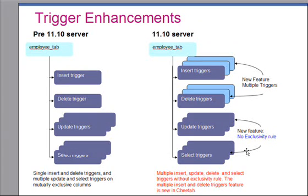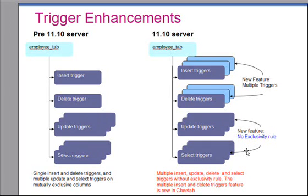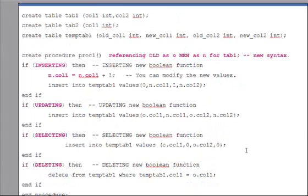There are new enhancements with respect to the number of triggers that you can create for a table. This helps when you have multiple modules working on the same set of tables, so each module can write its own trigger logic or application logic encoded in terms of triggers. We have not only relaxed the restriction on the number of triggers on a table, but also made it easier to write triggers and application logic, as shown in the next slide.